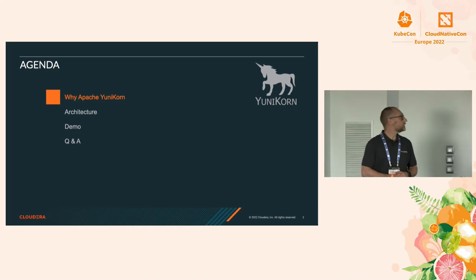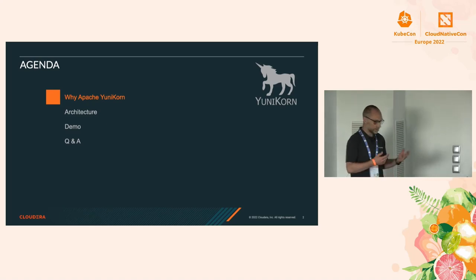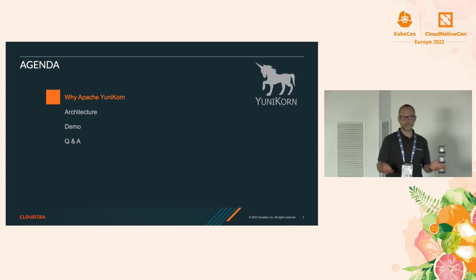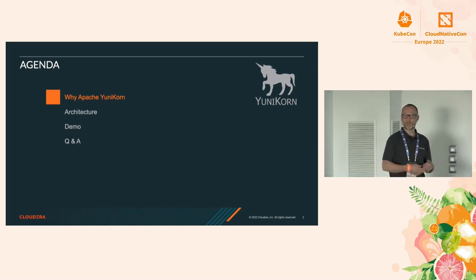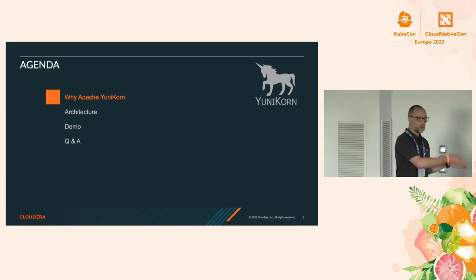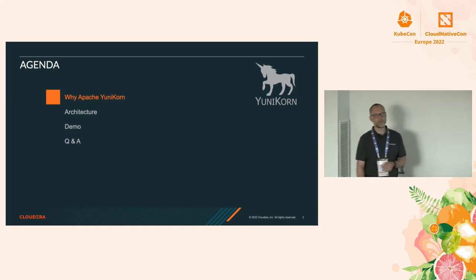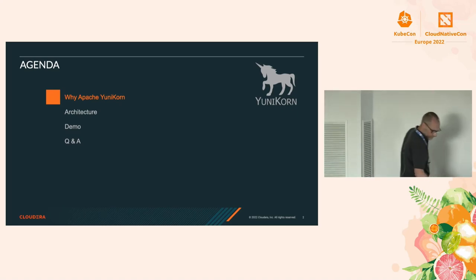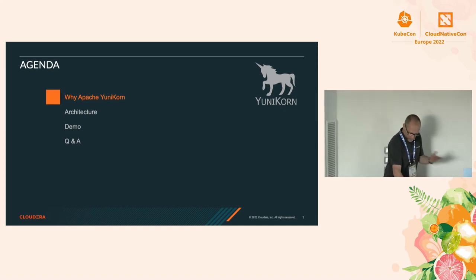We're going to look at why we're doing Apache Unicorn - why did we design it, why are we running it, why do we need this for the batch workloads? Then we'll dive into a bit of the architecture. We've been around for about three and a half years, which was before the plugin framework was there, so we come from an old architecture into the new plugin framework architecture. Then we'll have a short demo and hopefully some time left for questions. The plugin framework is only just released in Wanderdough, so it's in tech preview at the moment.